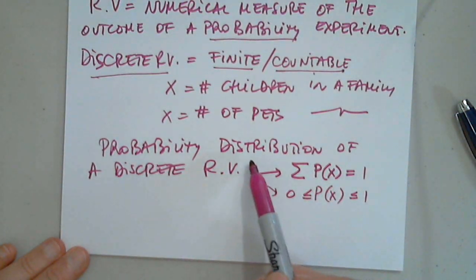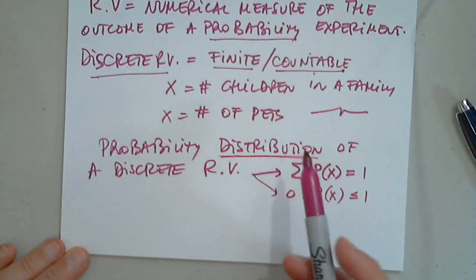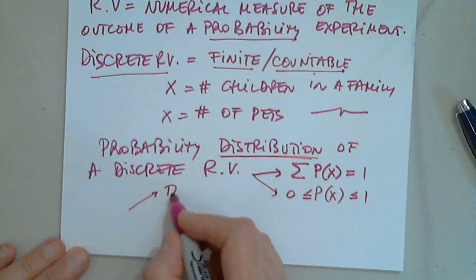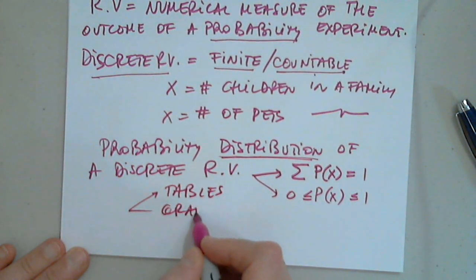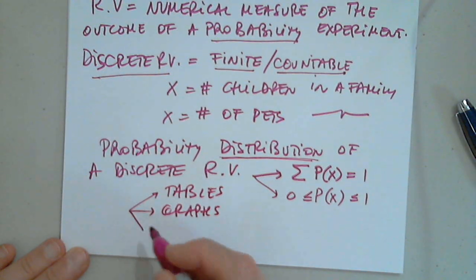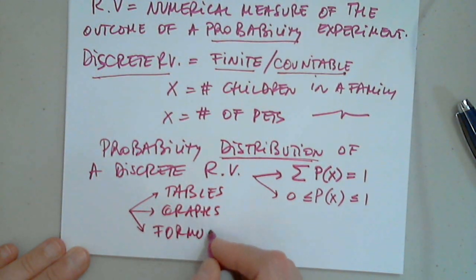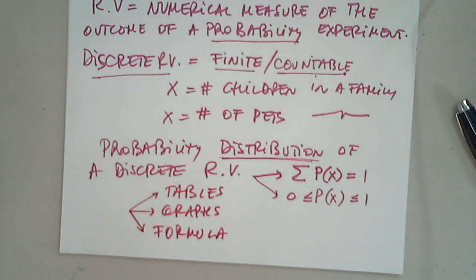Now, how can I be given a probability distribution? I can be given tables. I can be given a graph or graphs, or I can be given a formula, a mathematical formula. So, these are the possibilities.